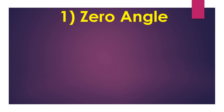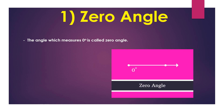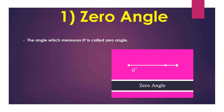First, zero angle. The angle which measures zero degrees is called a zero angle. The following figure shows a zero angle which measures zero degrees.